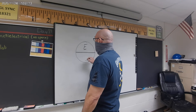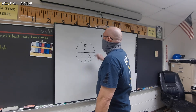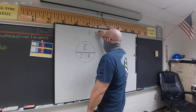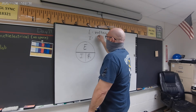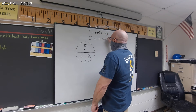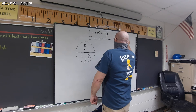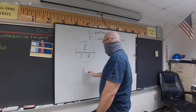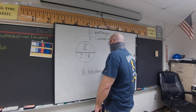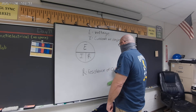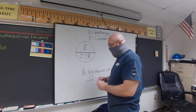So we have E, I, and R. In Ohm's Law, E is going to equal voltage. The I is the current, or the amperage. And R is resistance, or ohms — it's also the fancy horseshoe-shaped Omega symbol.